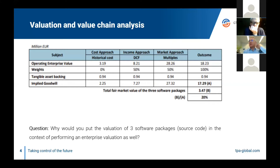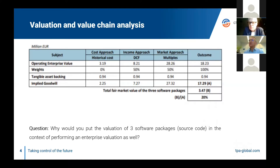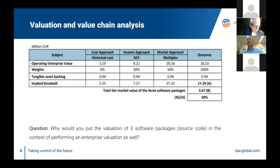The whole question here is: why would you put the valuation of three software packages — in this case, the transfer of source code between two group companies — in the context of performing an enterprise valuation? This is important in various breakout sessions where we always like to keep the numbers straight. It's sometimes only at the end of the game once you define what the intangibles really are about. If there are any questions, please raise them through the chat box.